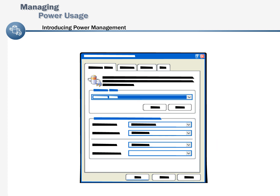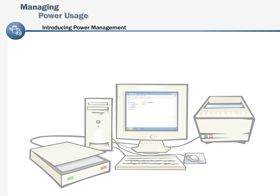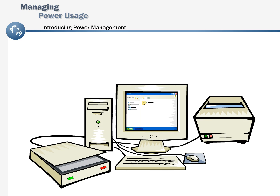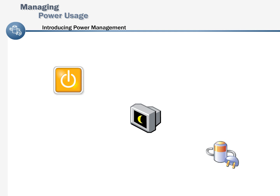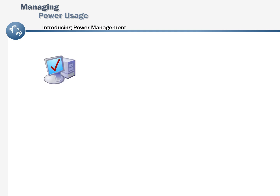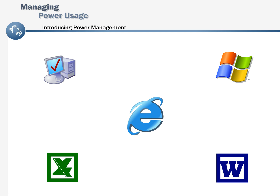To take advantage of these features in Windows, your computer needs to comply with a technology specification called Advanced Configuration and Power Interface, or ACPI. This open industry standard is used to integrate power management features throughout a computer system, including hardware, the operating system, and application software.